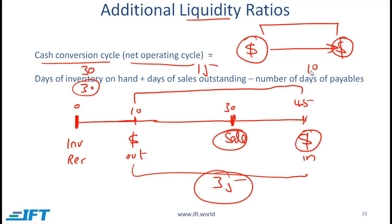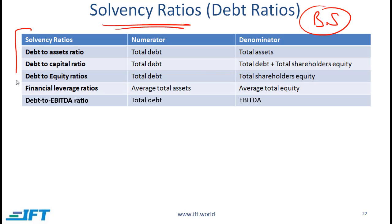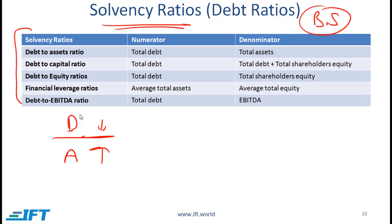A relatively high number would mean low liquidity, and a short number means high liquidity because the company is getting cash back very fast. Solvency ratios we have discussed when we talked about the balance sheet. Just as a refresher, these ratios measure a company's ability to pay back long-term debt. If you look at the debt to asset ratio, a small amount of debt relative to a large asset base means that the company is financially strong.